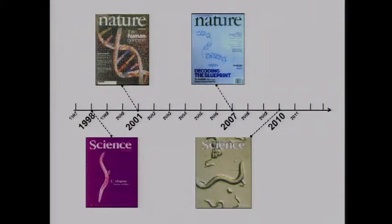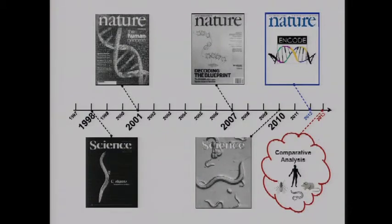I wanted to start by putting the analysis of the C. elegans genome in the broader context of the ENCODE project. The ModENCODE projects were in some sense pilot projects for the annotation of the human genome. I'm going to focus on the annotation we did of the worm genome, the lessons we learned, and how we applied them to the annotation of the human — and future analysis will compare worm, fly, and human in an apples-to-apples comparison.